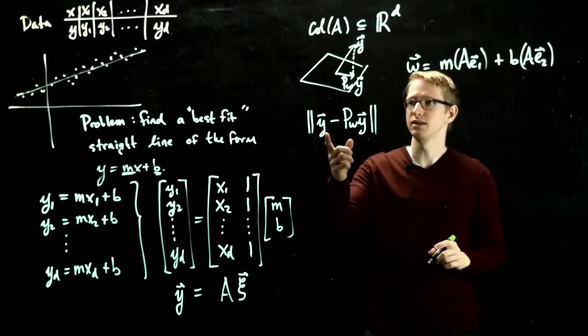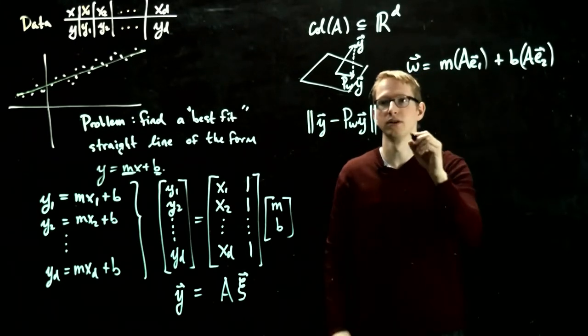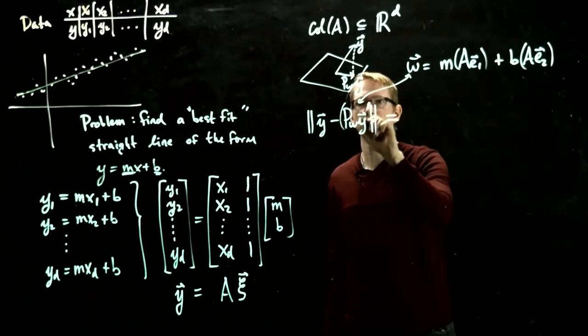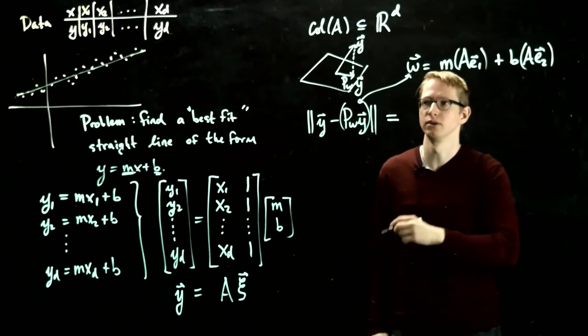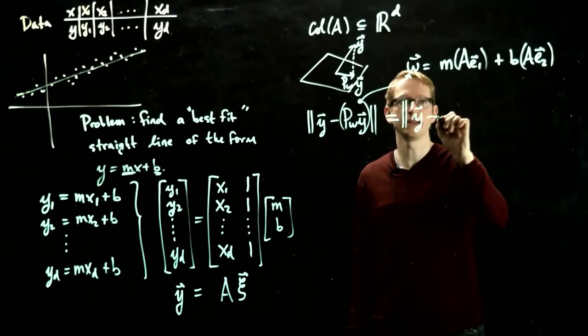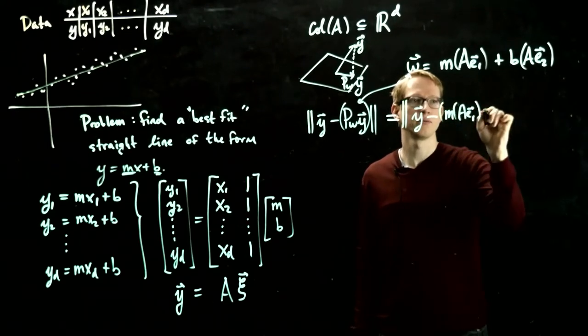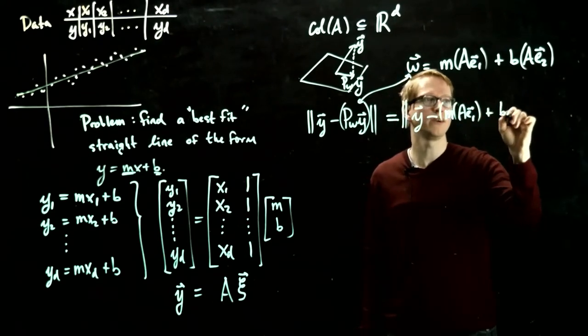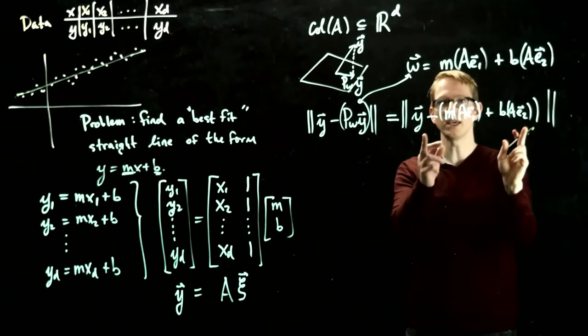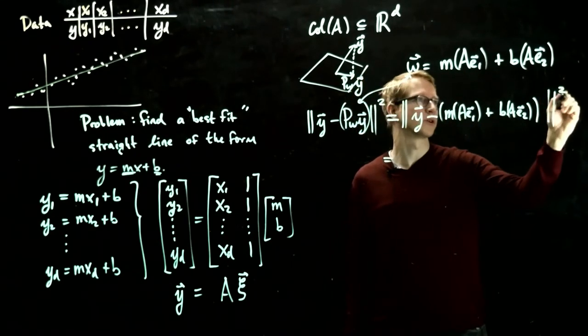And we want to minimize the distance between our data vector y with this vector. So in other words, if we take this difference, let's replace this with w for now, because let's imagine we don't yet know that this is the projection. So this difference is trying to minimize y minus mAe1 plus bAe2. And if we look at what each of these components give you, then this equals, let's square this, just so we don't have to deal with square roots.